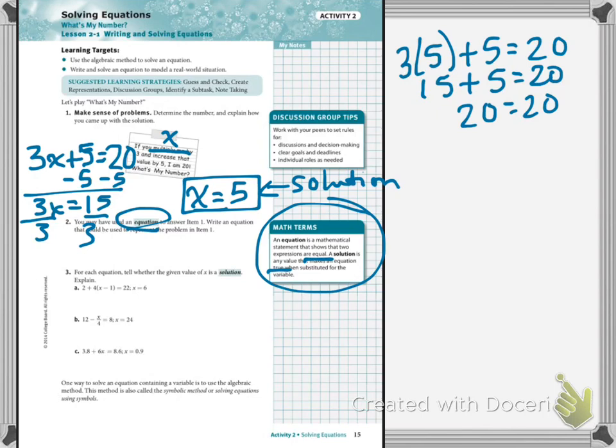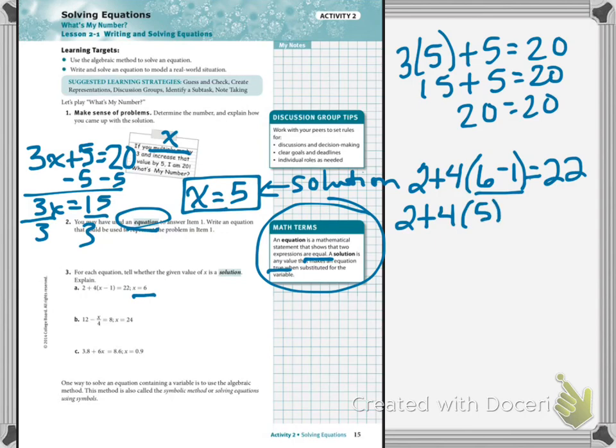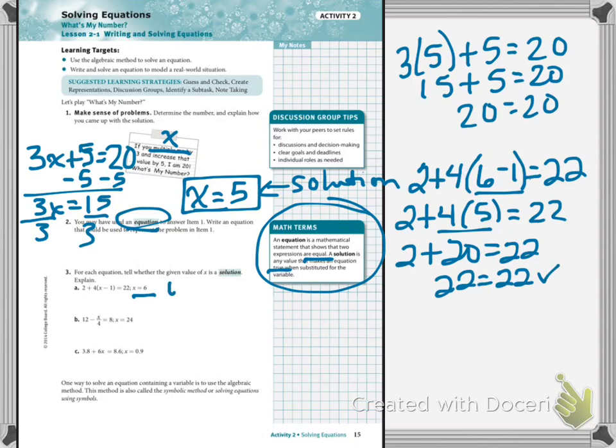So let's try another one, and now this question is not asking you what is the solution, it's saying will this work? Will this be a solution? So I'm going to do my work over here, 2 plus 4 parenthesis, now they're saying x equals 6, so in place of x I'm going to put the 6 equals 22. Order of operations, parenthesis first, 2 plus 4 times 5, multiply, 2 plus 20, 22 equals 22. So we're going to say yes, this is a solution.